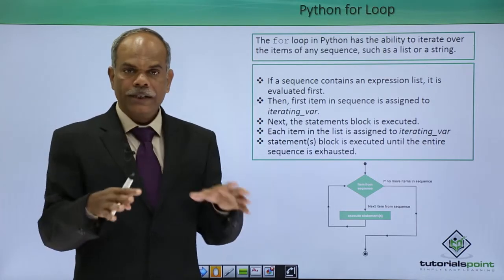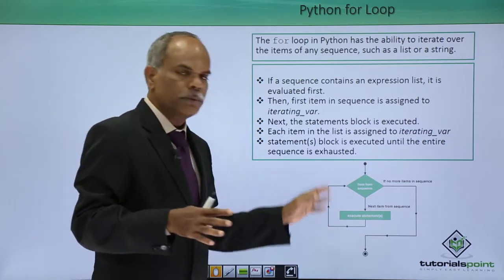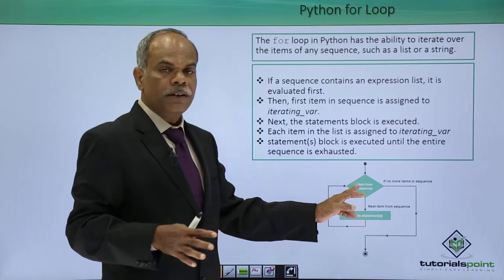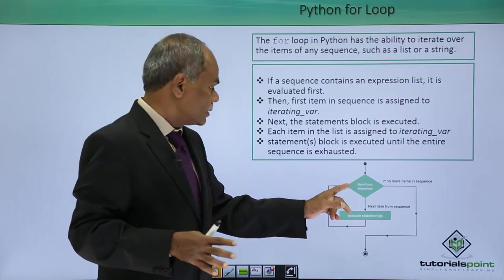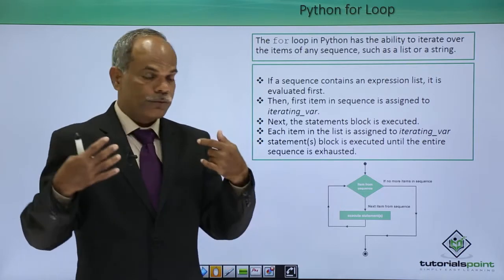So, this behavior is explained or represented by a very simple flow chart. You can see here as the item reaches the sequence, as the control of the program reaches the sequence, it takes up the first value.